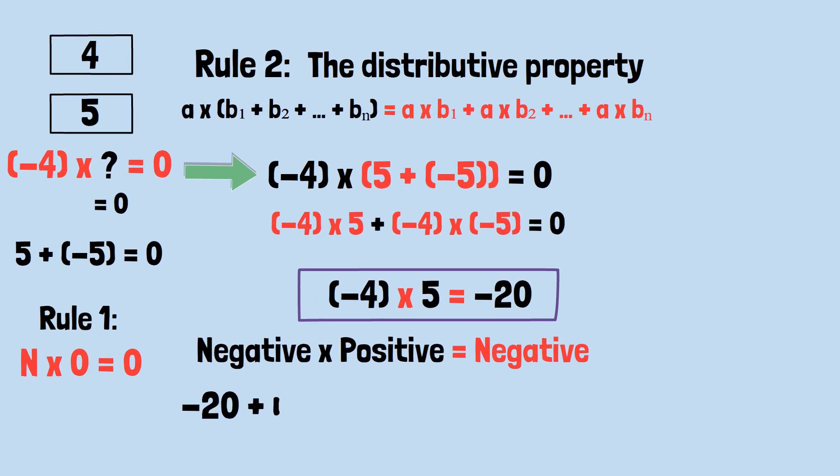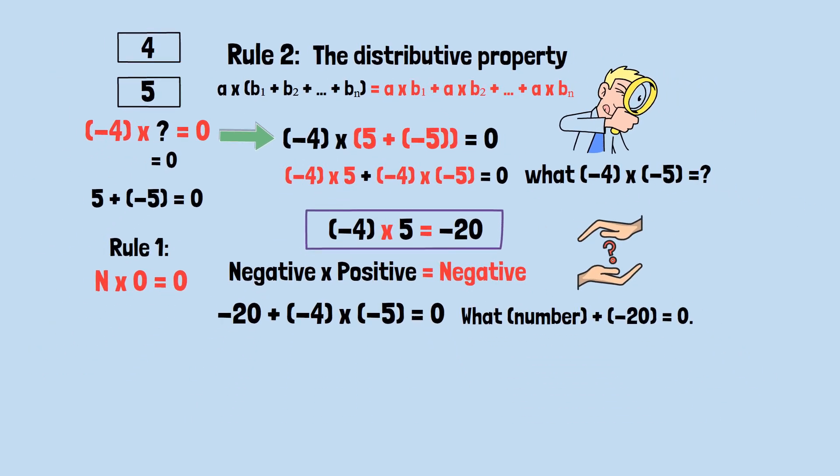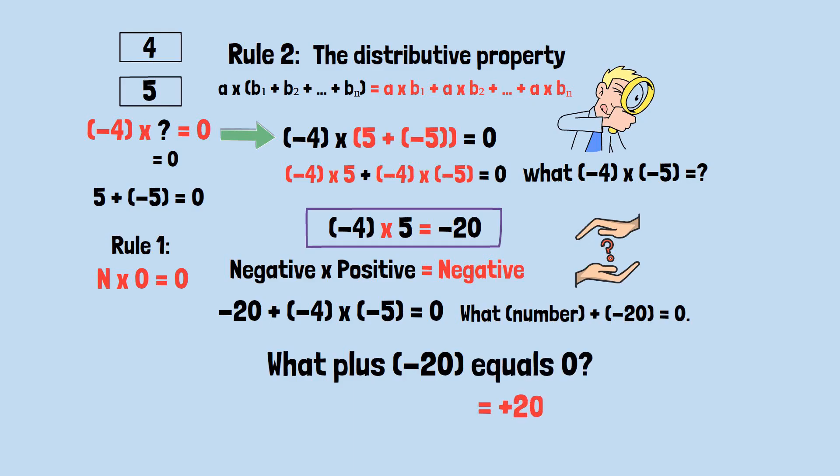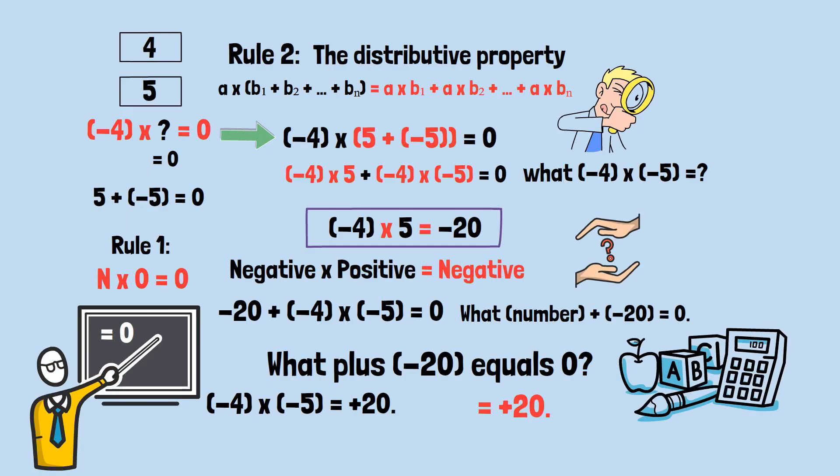So the equation becomes -20 + (-4) × (-5) = 0. To find out what (-4) × (-5) equals, we need to figure out what number, when added to -20, gives us 0. What plus -20 equals 0? The answer is positive 20. So, (-4) × (-5) = positive 20. We started with a true statement. Something equals 0. And used only basic mathematical rules to show that (-4) × (-5) must equal positive 20. Since 4 and 5 were just examples, this same logic works for any negative numbers.